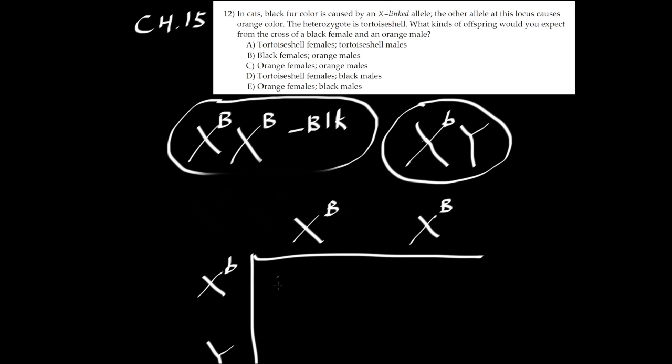One offspring will be heterozygote but it's female because we have XX. Another the same thing, it's heterozygote but female.